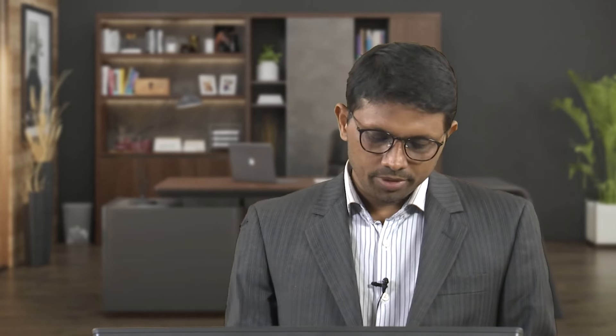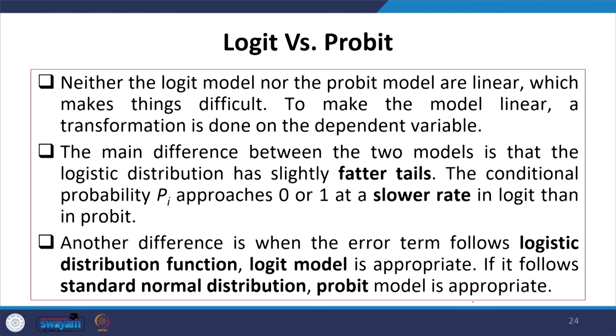Since probit has probabilities with extreme values of 1 and 0, it is always suggested to go for marginal effects. Again, we take the derivative of the probability function with respect to x, and interpret accordingly.